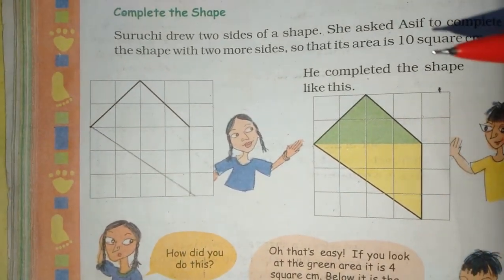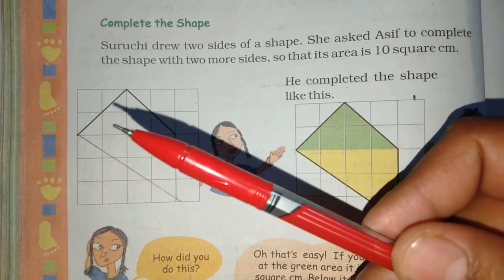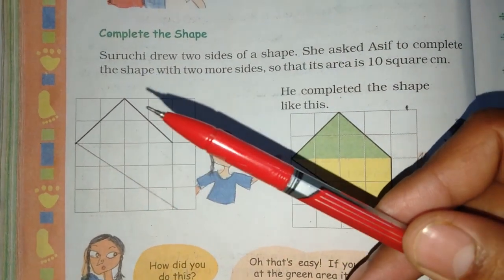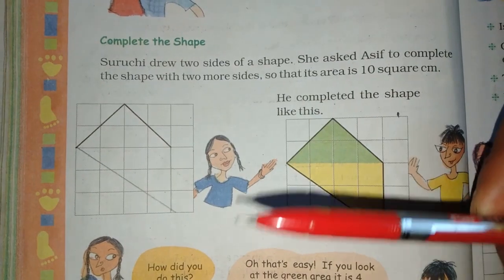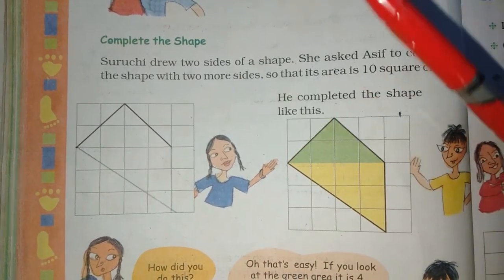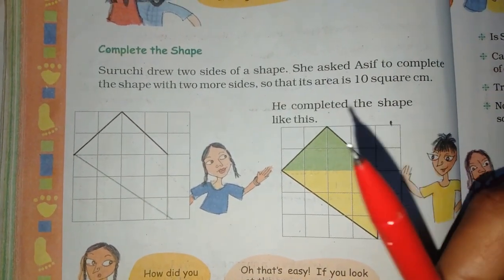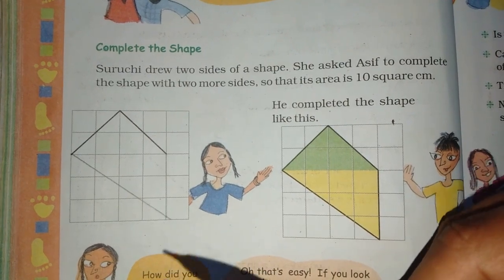Suruchi's two sides are drawn in dark black. What do you want to do? Drawing the shape. Asif said you can complete two sides with the shape.